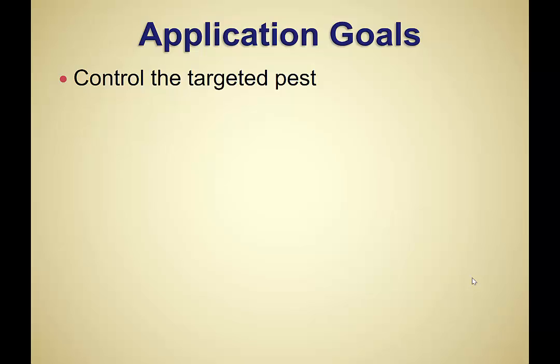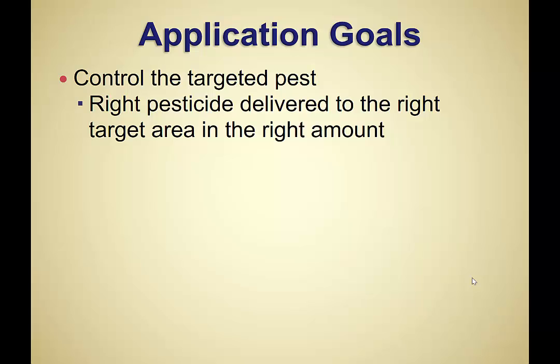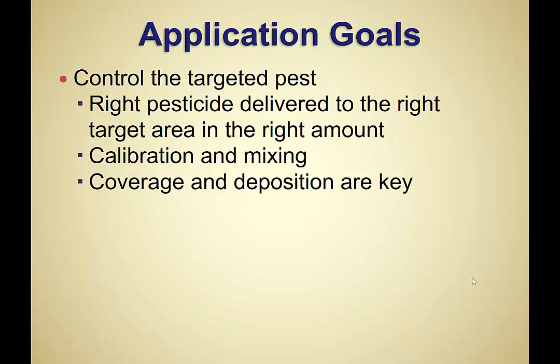When we're making an application, what are our goals? Number one: control the targeted pest. I bring it up because we're also going to talk about a secondary goal — drift reduction — and in a lot of cases we hear so much about drift reduction that we start to focus our application on that and forget about the primary goal. For an effective application, we want to get the right pesticide to the right target area in the right amount. Calibration and mixing ensure our equipment delivers the right amount of spray.